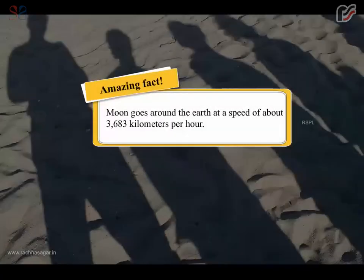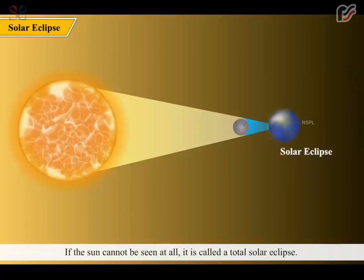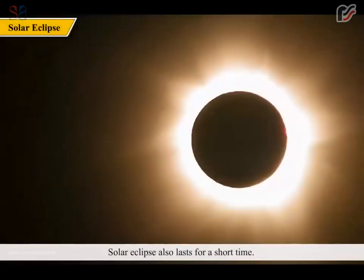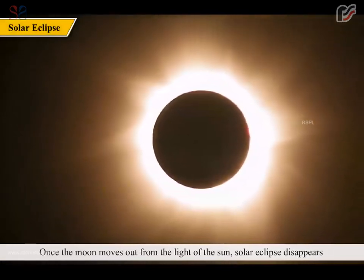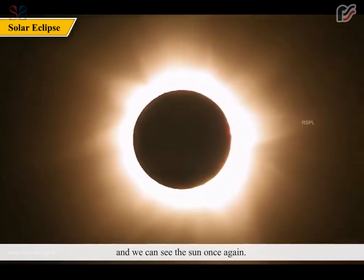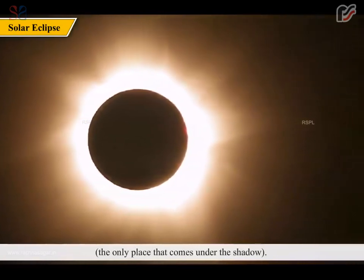Amazing Fact: The Moon goes around the Earth at a speed of about 3,683 km per hour. A Solar Eclipse is formed when the Moon comes between the Sun and the Earth, and the Moon's shadow falls on the surface of the Earth. It occurs on a New Moon day. If the Sun cannot be seen at all, it is called a Total Solar Eclipse. If only a part of the Sun is visible, it is called a Partial Solar Eclipse. A Solar Eclipse also lasts for a short time. Once the Moon moves out from between the Earth and Sun, the Solar Eclipse disappears and we can see the Sun once again. A Solar Eclipse is seen only in certain parts of the Earth — the only places that come under the Moon's shadow.